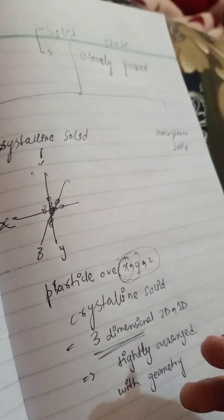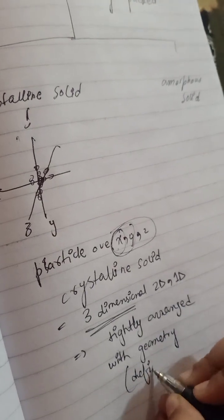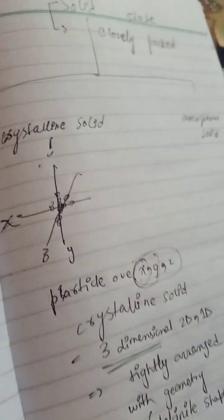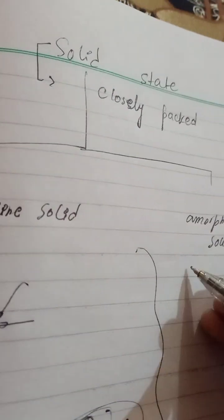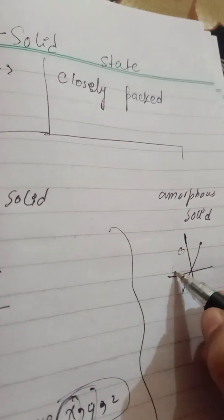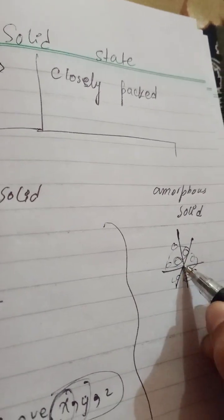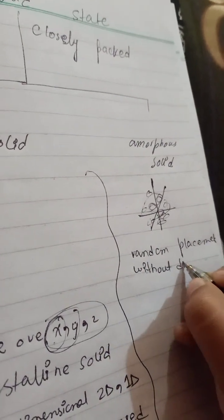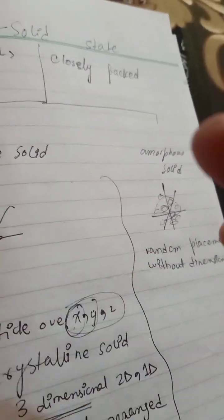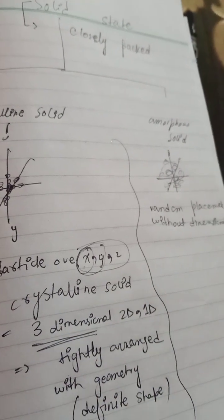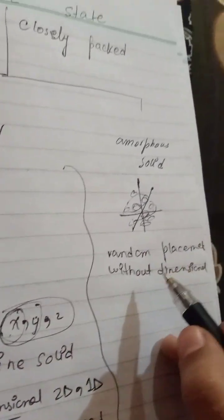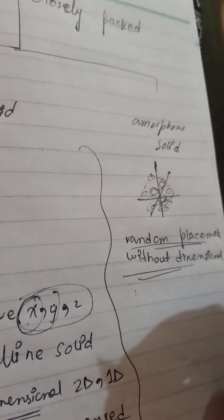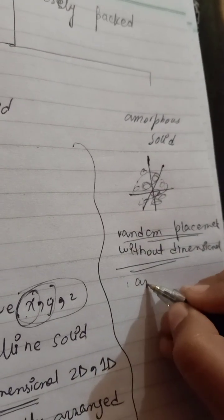The particles are tightly arranged and they are having geometry. They are regular particles which means they are having a definite shape. If we talk about amorphous, this is the opposite of crystalline, which means the particles are not on the axis — they are moving here and there, so this is a random placement. They are without dimensional, meaning no geometry.